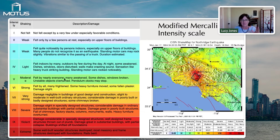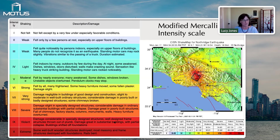At intensity five, it's felt by everyone and people are wakened up. Starting at seven, you begin to get significant damage. At nine, even specially designed structures might be coming down. Intensity ten is the most extreme — when you're right on top of a big fault.